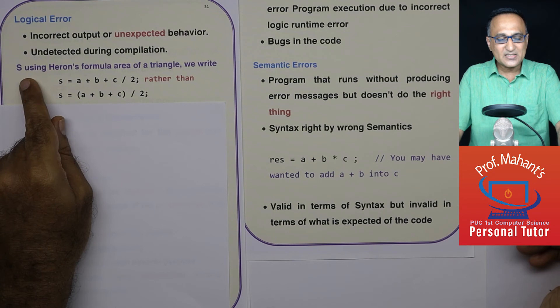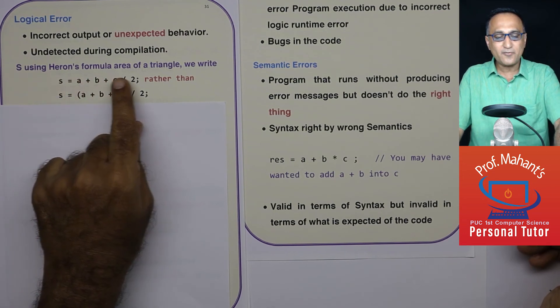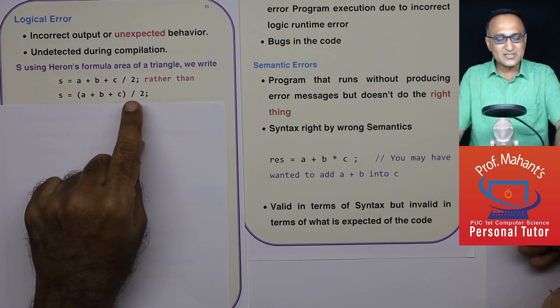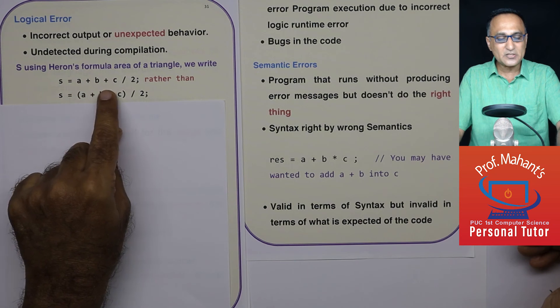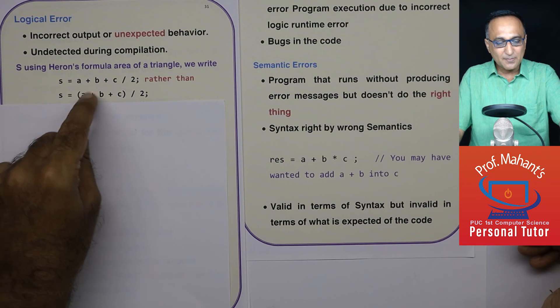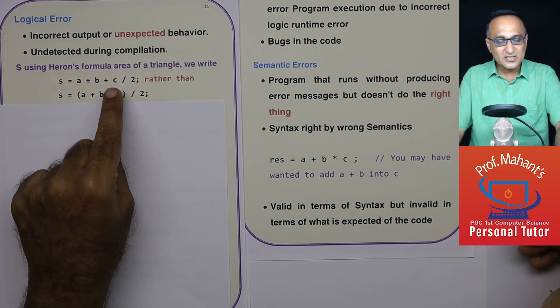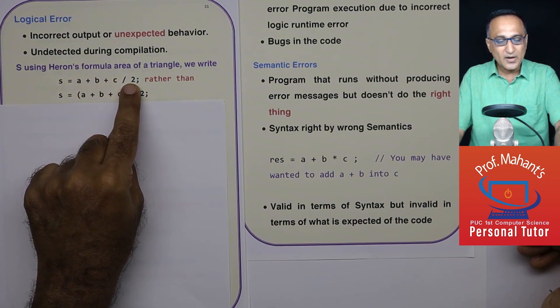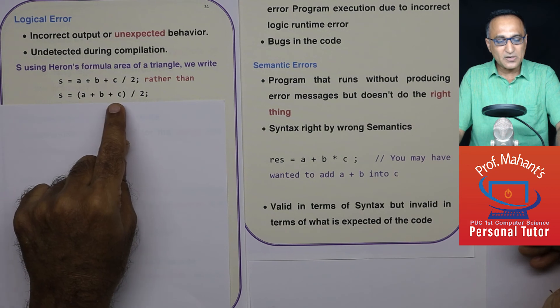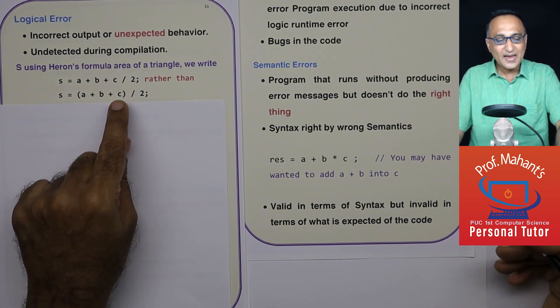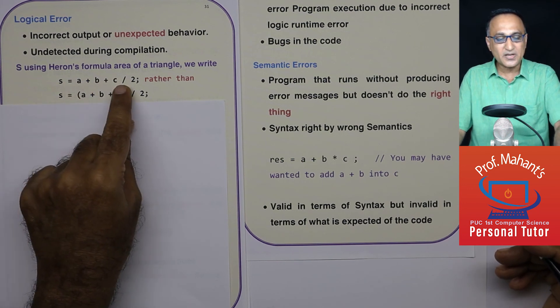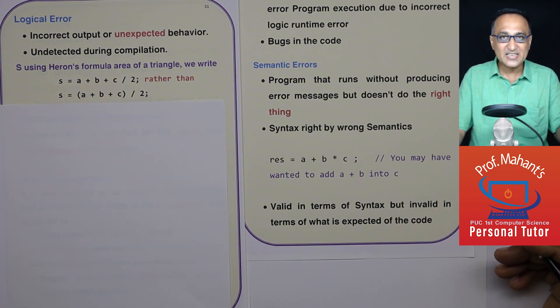Say you're trying to calculate semi-perimeter using Heron's formula for area of a triangle. So you should be writing s is equal to a plus b plus c divided by 2, but you have written like this: a plus b plus c by 2. Unlike maths, this complete thing is not going to be divided by 2. It will first divide c by 2, and whatever is the result, it will be added to a plus b, whereas you wanted a plus b plus c to be added together and that to be divided by 2. But that is definitely not going to happen because you have done this particular mistake. So this is an example of a logical error.